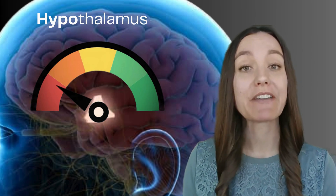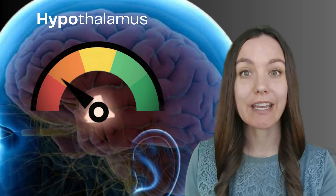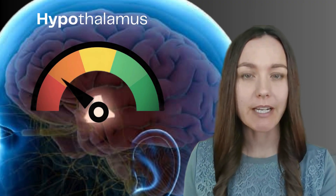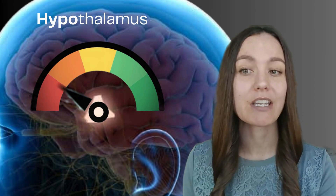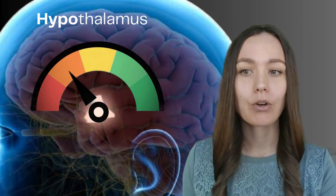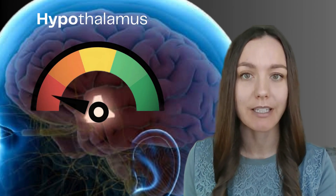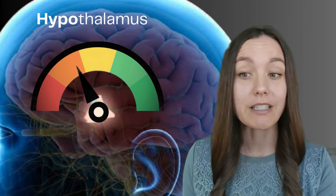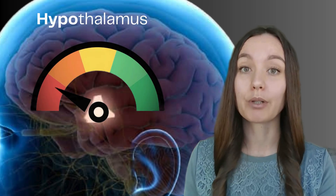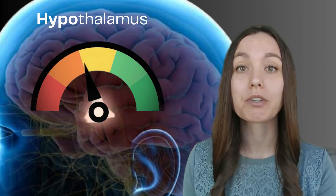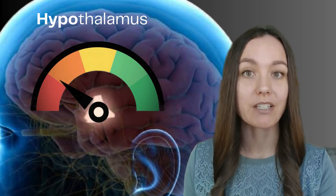To remember the hypothalamus's function, I focus on the first part of the word, 'hypo,' which means below or low. I picture a gauge at the center of the brain that tells my body when I'm getting low — like an alert that body temperature is getting too low and we don't want hypothermia, or that the body is getting low on energy and blood sugar is too low and we need to eat to avoid hypoglycemia, or that we're low on fluids and need to drink water. So the hypothalamus not only sits below the thalamus, but also reminds us when we're getting low and need to fulfill basic needs to return to homeostasis.